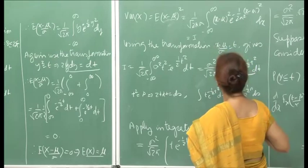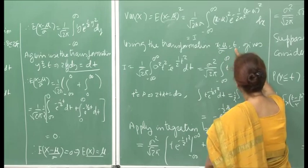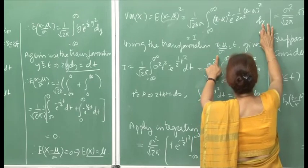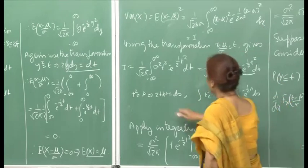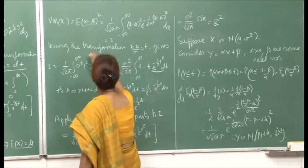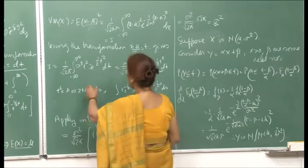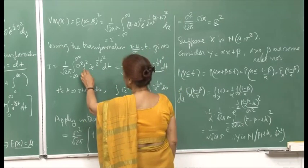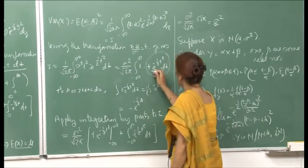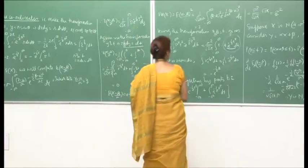Now here, what you have to do is again make the transformation (x − μ)/σ = t. So dx/σ can be replaced by dt, and the limits remain the same. This is a simple integral, and this becomes σ², because you have (x − μ)², so this is σ² t². Now, what I do here is break up the t² into t and t, because this integral we have handled already while computing this thing. So therefore, we will do integration by parts.